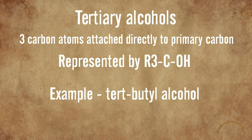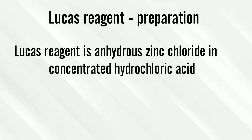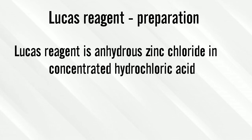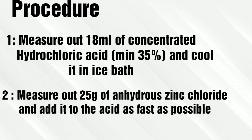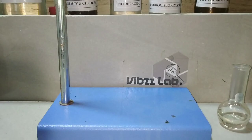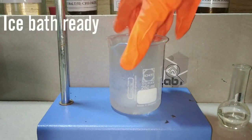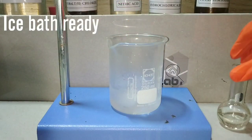The example of tertiary alcohol used is tertiary butyl alcohol. Before the test, we will prepare the Lucas reagent, which is anhydrous zinc chloride in concentrated HCl. For this test we need concentrated hydrochloric acid — a minimum of 35% — and anhydrous zinc chloride. We will also require an ice bath, as this reaction is going to generate a lot of heat.